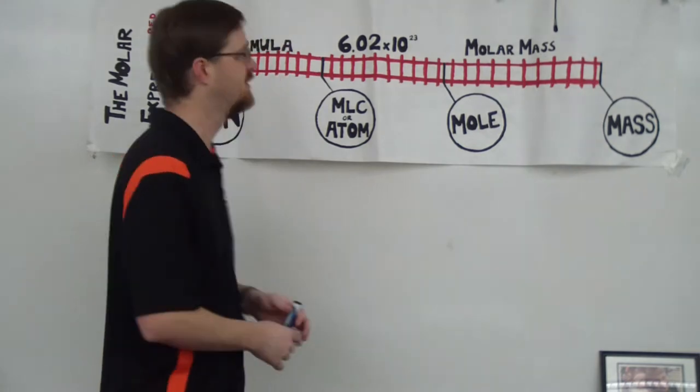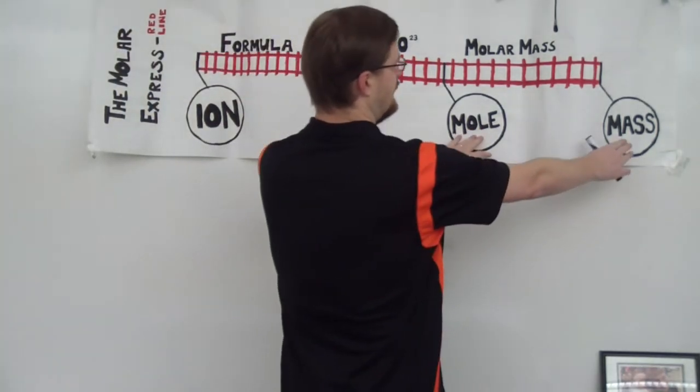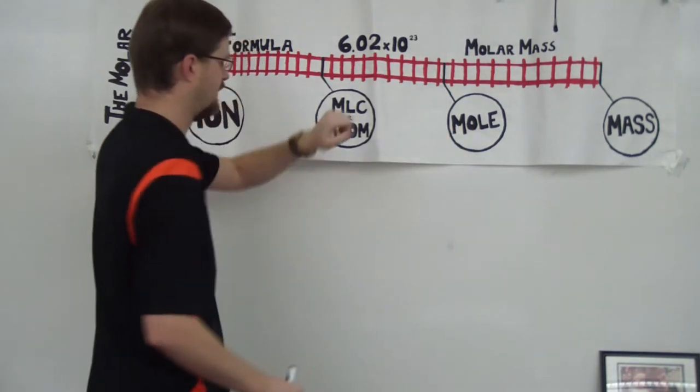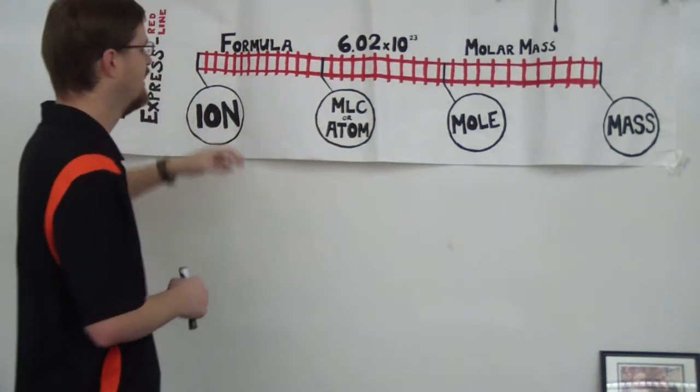Okay, so the units represent our stations, and then the information up top, these are the conversion factors that help us to go between each of these conversions. So whenever you're going between moles and grams, you have to use the molar mass. Where do you find the molar mass? On the periodic table, of course. When you're going between molecules and atoms and moles, you use 6.02 times 10 to the 23rd atoms per mole. And then in the unlikely event that you have to go to ions, so from molecules to ions, it doesn't happen all that often, but sometimes it does, you will use the formula of the compound that you're looking at to look at the subscripts to figure out what your conversion rate is going to be.